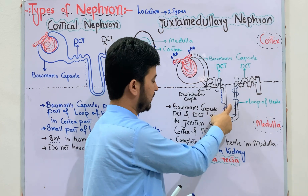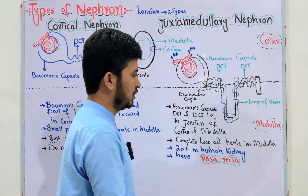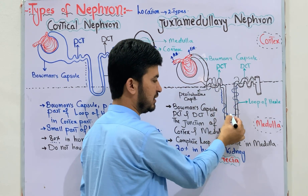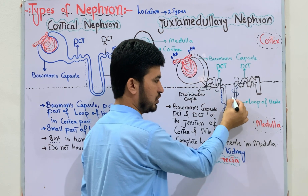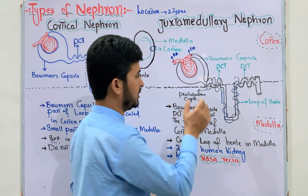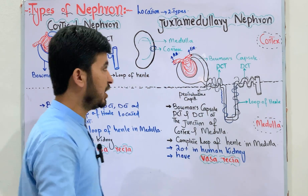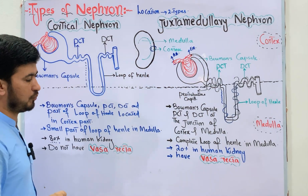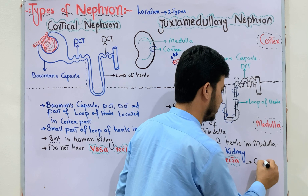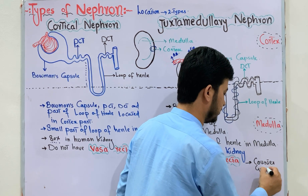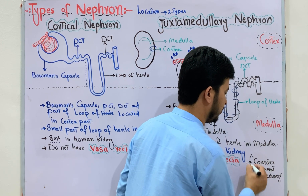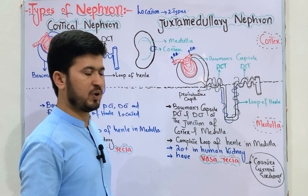The second type of capillary network is the vasa recta, which is present in the juxtamedullary nephron and absent in the cortical nephron. The vasa recta runs parallel to the loop of Henle and forms a capillary network. The vasa recta helps in the counter-current exchange mechanism.